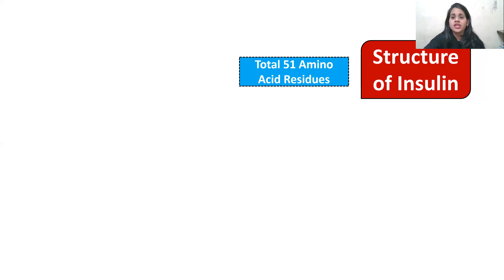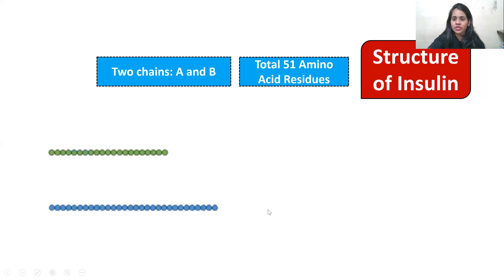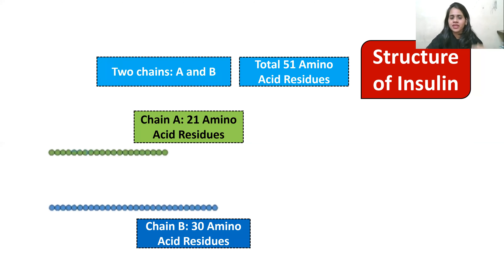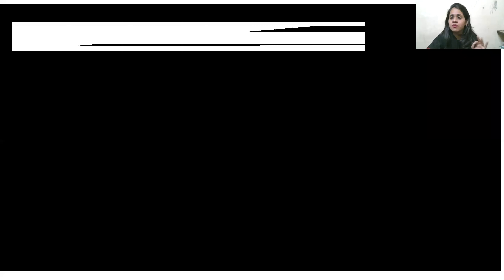Let's study the structure of insulin. Insulin is made up of a total of 51 amino acid residues. There are two chains: chain A and chain B — you can see them on screen in green and blue. Chain A is made up of 21 amino acids, and chain B is made up of 30 amino acid residues. These two chains are joined together by disulfide bonds.